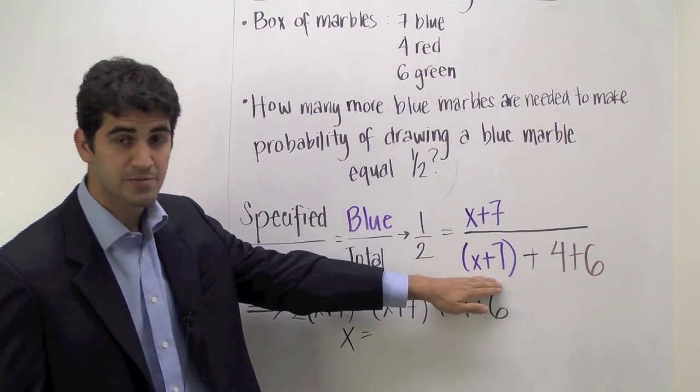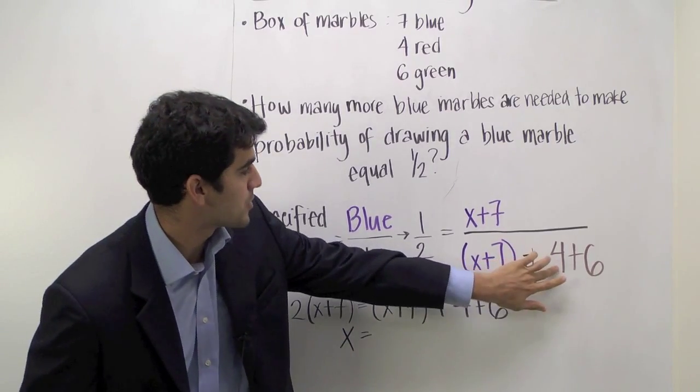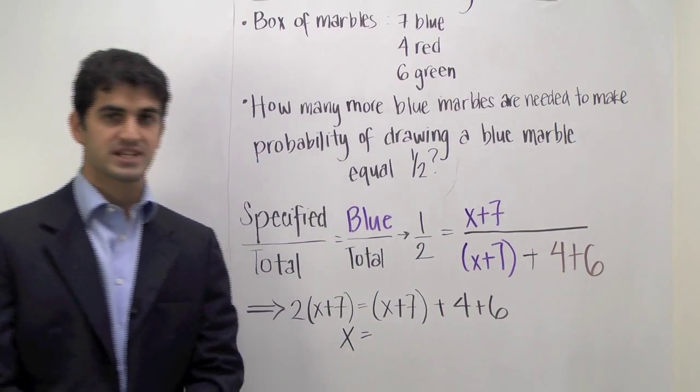So that's going to be the number of blue marbles, x plus 7, plus the number of red marbles, 4, plus the number of green, 6, to give us the total.